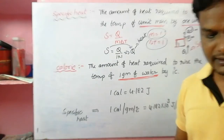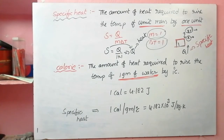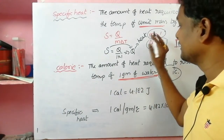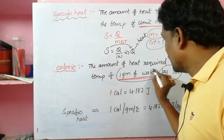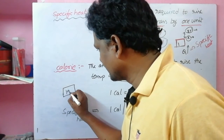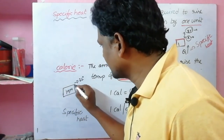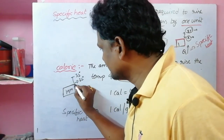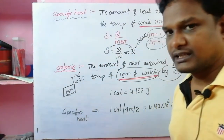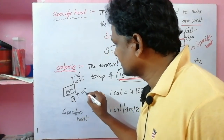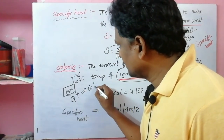Coming to calorie — same definition but specifically for water. The amount of heat required to raise the temperature of one gram of water by one degree is called one calorie.